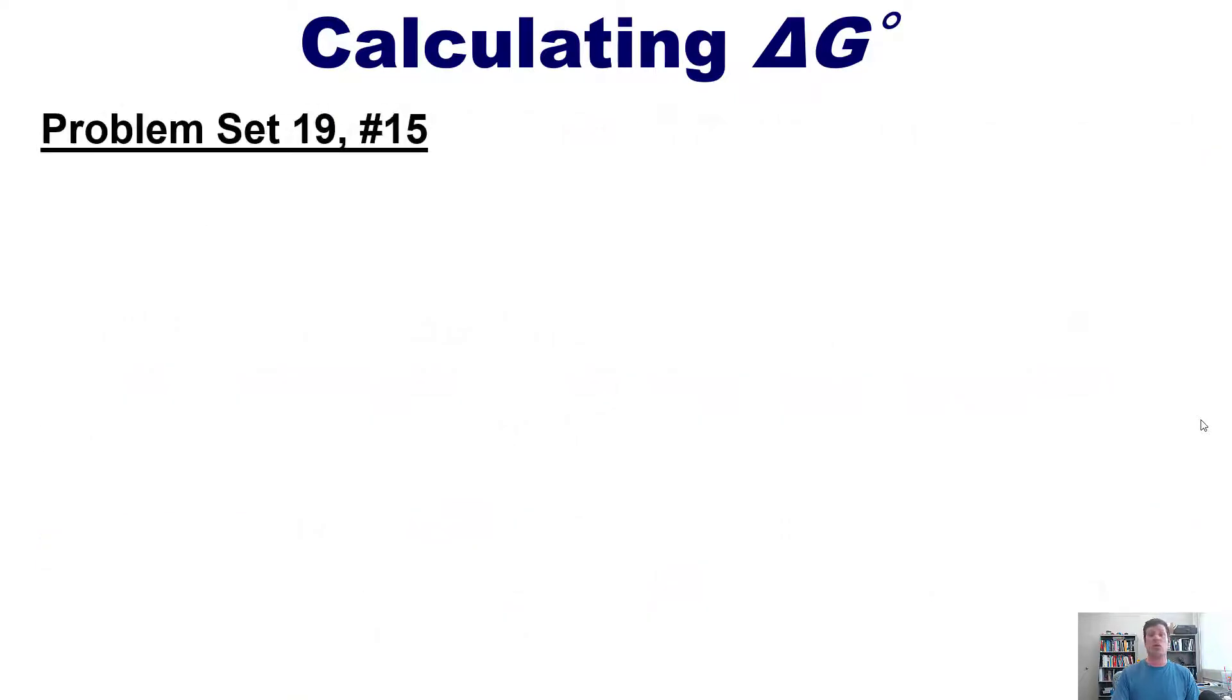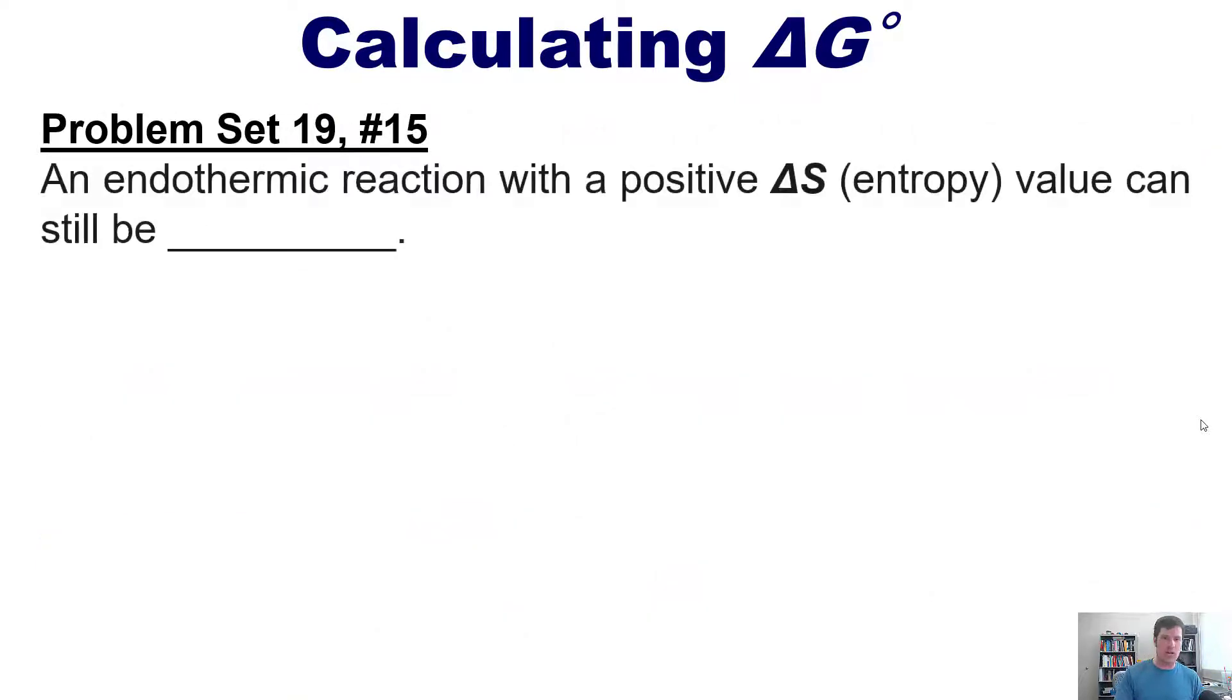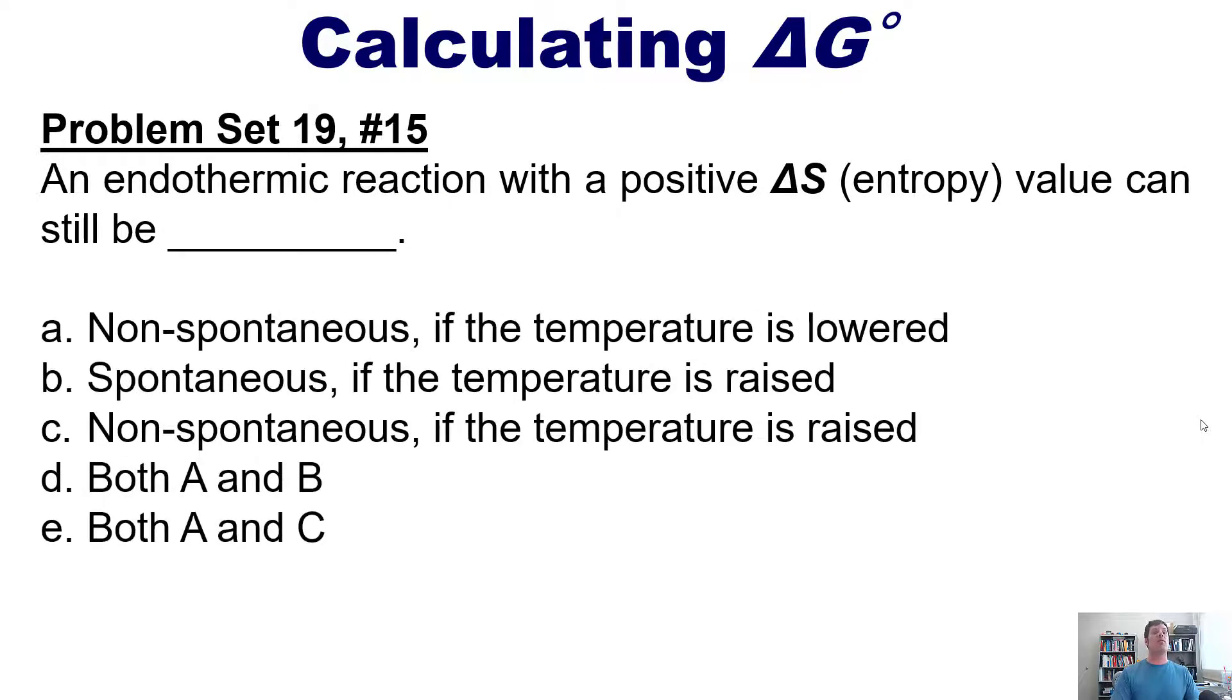That takes us then to a beautiful example problem, which says an endothermic reaction with a positive delta S or entropy value can still be which of the following? I invite you to try this on your own, and then you can click the link that's floating over my head or in the description beneath this video to see the answer.